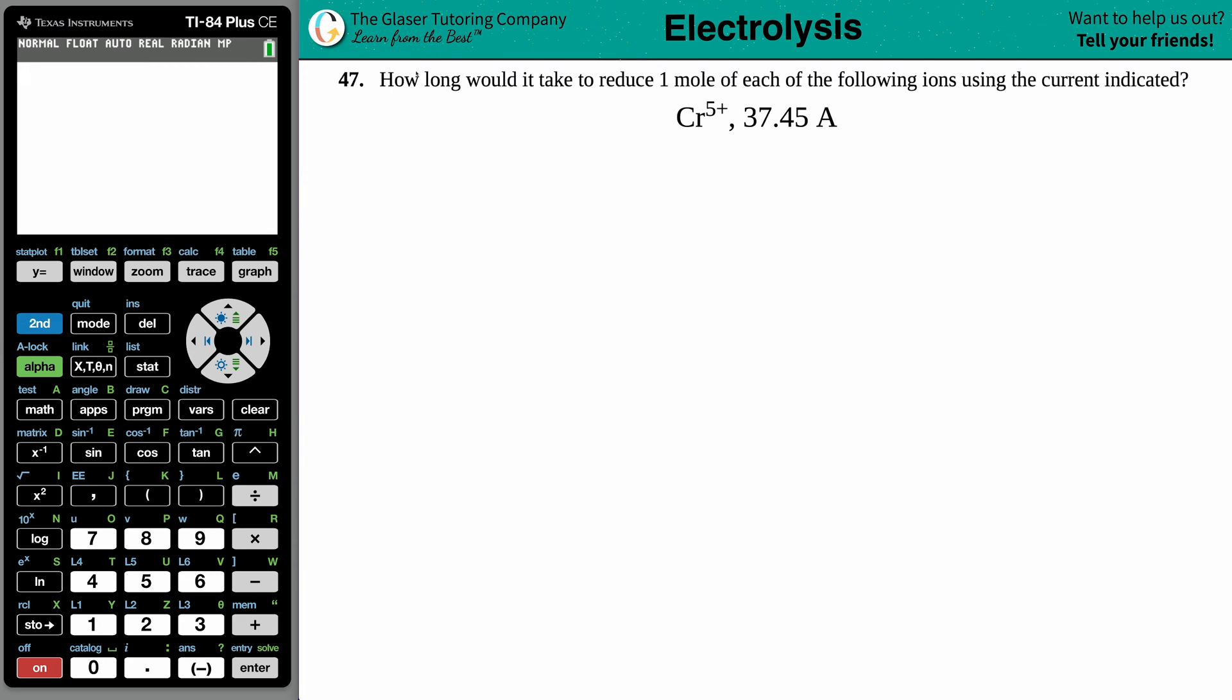Number 47: How long would it take to reduce one mole of each of the following ions using the current indicated? We have chromium ion, in this case it's Cr^5+ with a current of 37.45 amps.